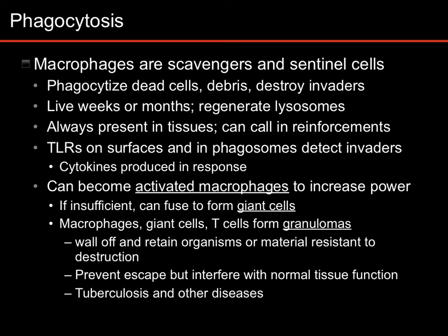Granulomas are something that you form when there's some pathogenic thing that you can't fight off. Maybe it's a biofilm that's resistant to phagocytosis. Maybe it's a parasite that's too big. Maybe it's a tumor. Either way, this is a last-ditch effort to contain the damage — you have all of these cells that basically form a wall around it and calcify, because they become hard. The idea is we're going to encapsulate this dangerous thing, this pathogen or this cancer, and hopefully at least stop it from spreading. This prevents the escape of the organism, but you basically walled off a section of your body that now no longer works.